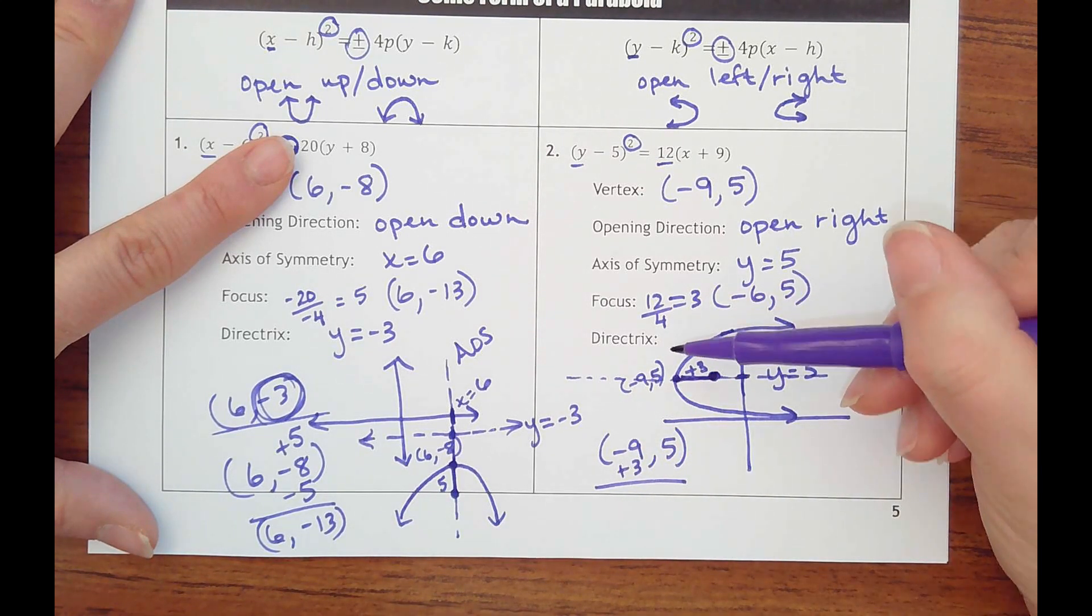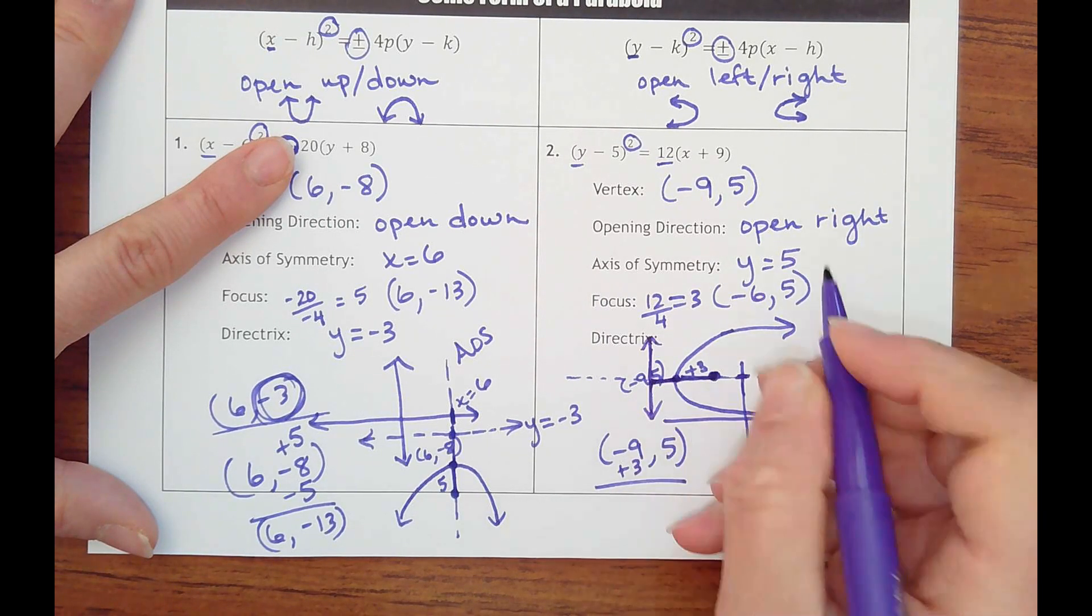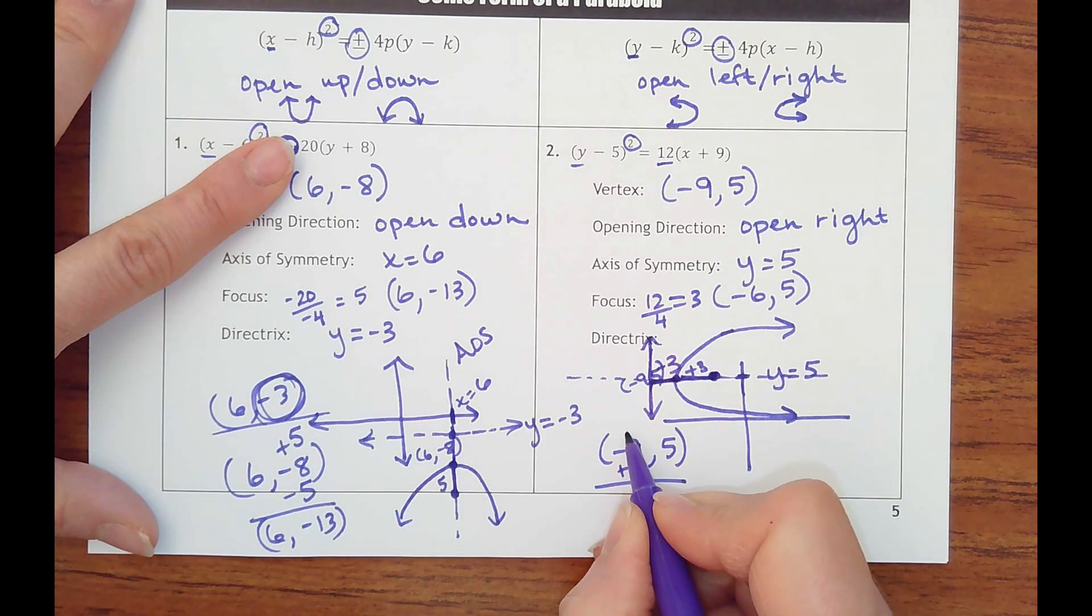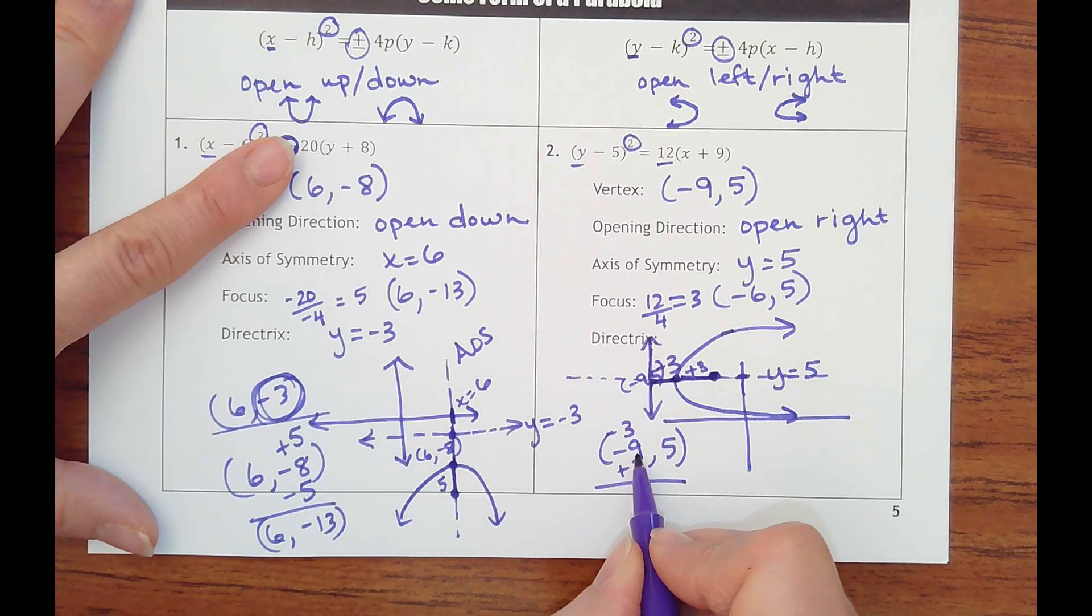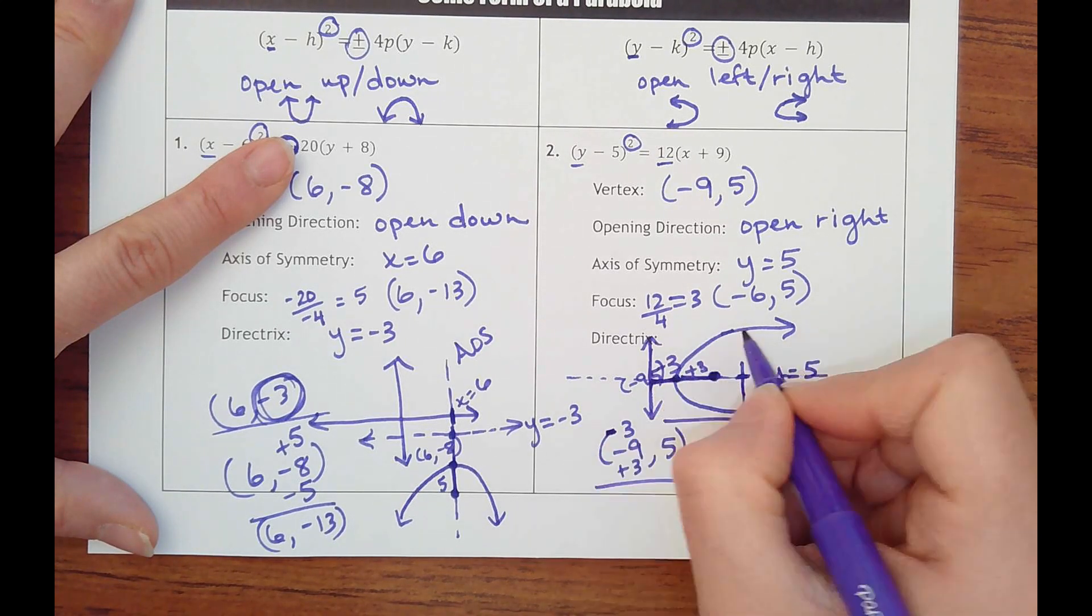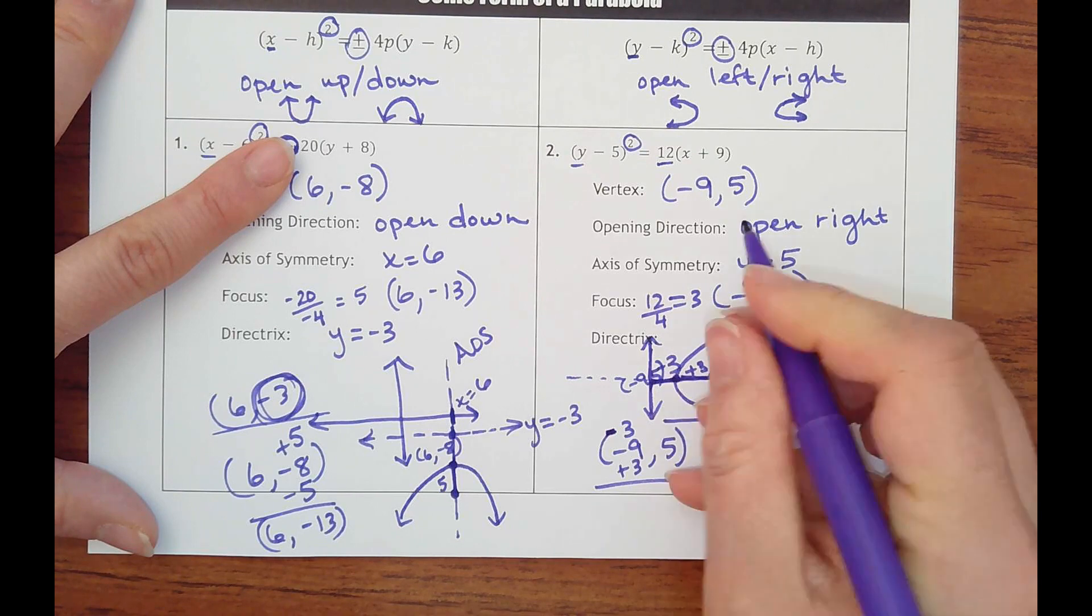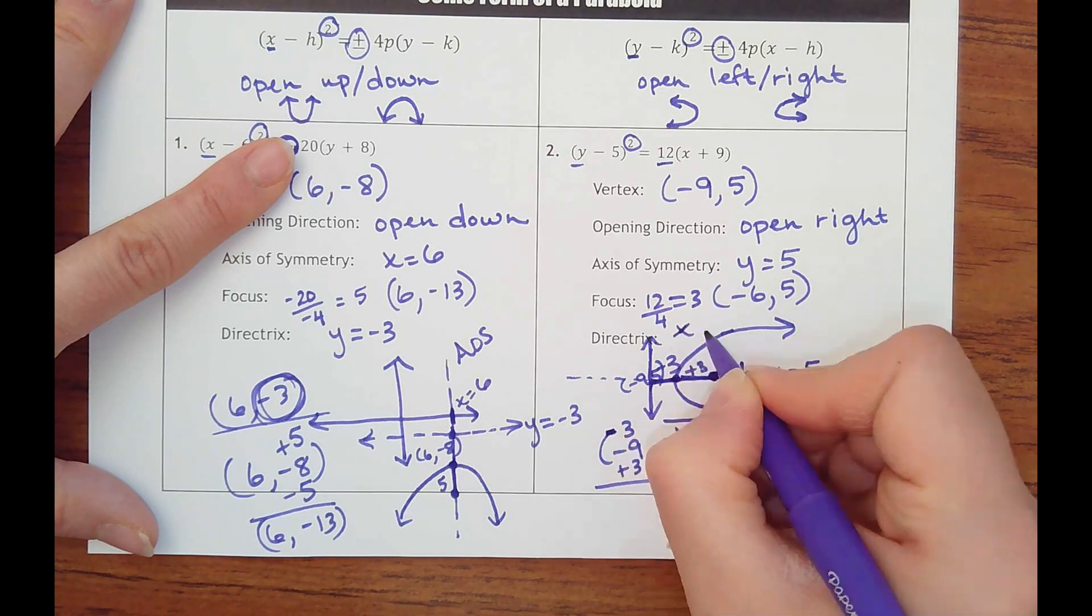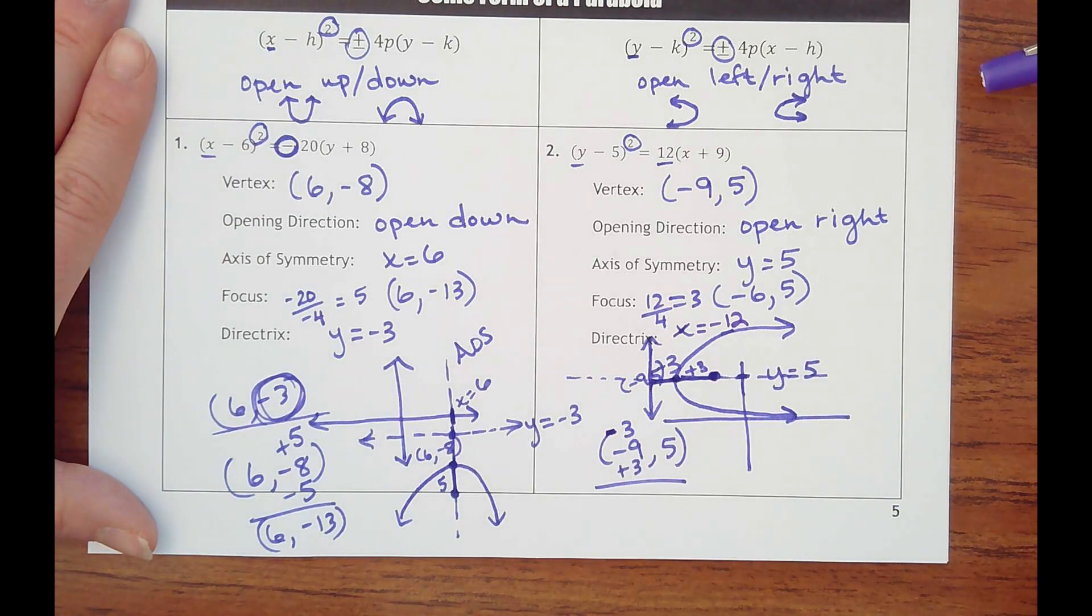And then the directrix is going to be running vertically back behind it, 3 units. So it's going to go back 3 from here, and I'll be at negative 12, comma 5. Or the line then would be a vertical going through the x-axis, so x equals negative 12 would be my answer. But again, sketching the picture is definitely the way to go.